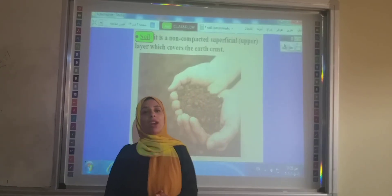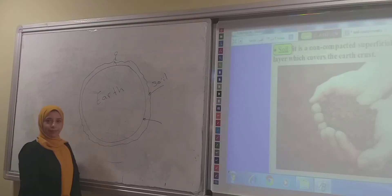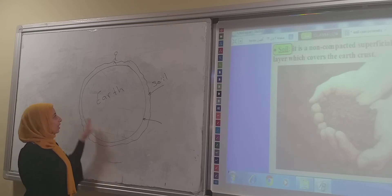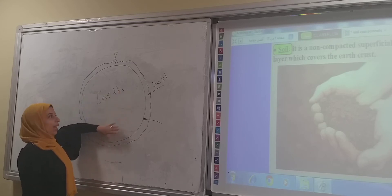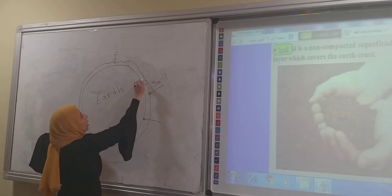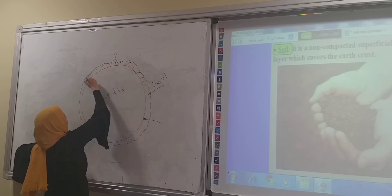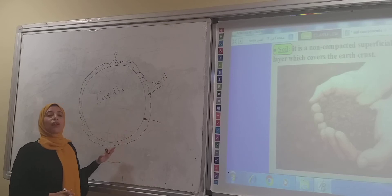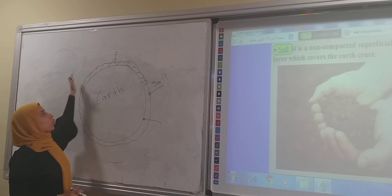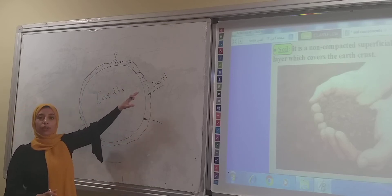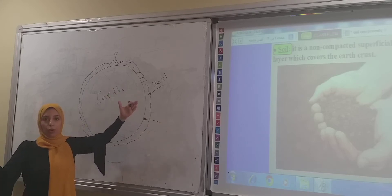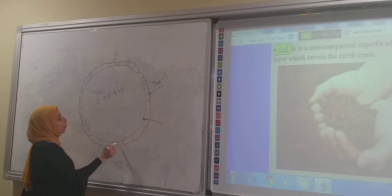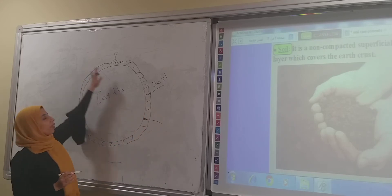Let's see what is the meaning of superficial layer. As you can see, that's the earth, and this layer is called the soil. So the soil is the upper part that covers the earth, or the superficial layer. Superficial means 'upper.' So the soil is the non-compacted superficial layer that covers the earth's crust.